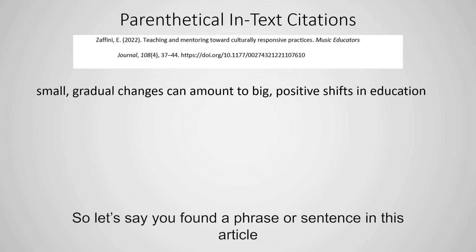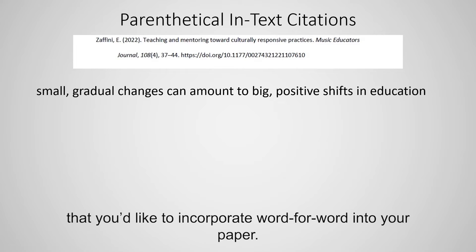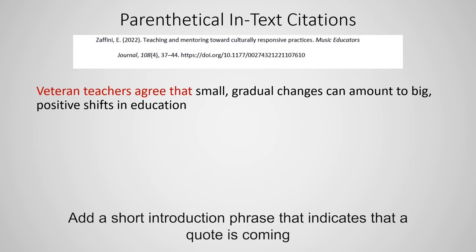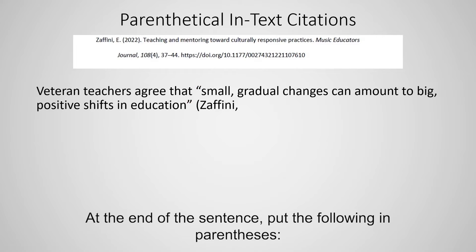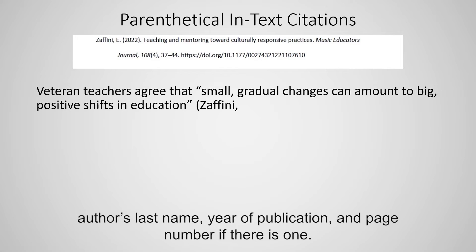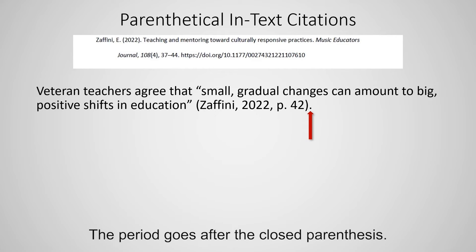So let's say you found a phrase or sentence in this article that you'd like to incorporate word for word into your paper. Add a short introduction phrase that indicates that a quote is coming. Put quotation marks around the text you've copied word for word. At the end of the sentence, put the following in parentheses: author's last name, year of publication, and page number if there is one. The period goes after the close parenthesis.